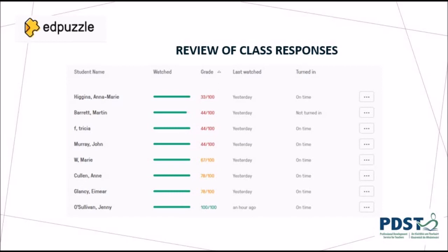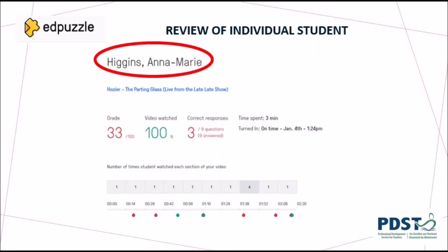Once the student has been assigned the exercise and completed it, the teacher can review the class progress. You can see how many and which students have completed the exercise, whether they have fully or partially completed it, and also when the student completed the exercise. Furthermore, you can review individual student progress and analyse how long they spent doing the exercise, see their overall result, and even how many times they watched particular segments of the assigned video.